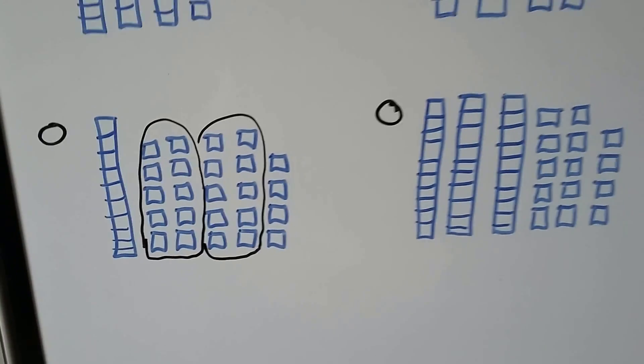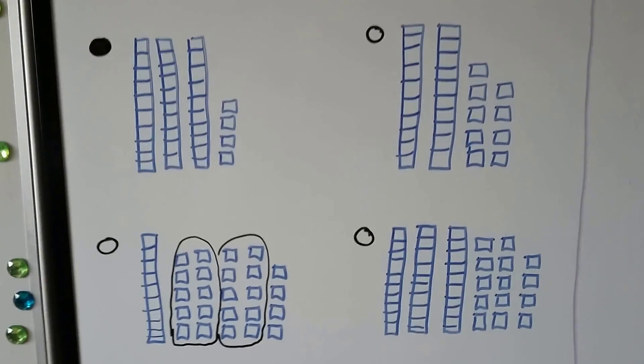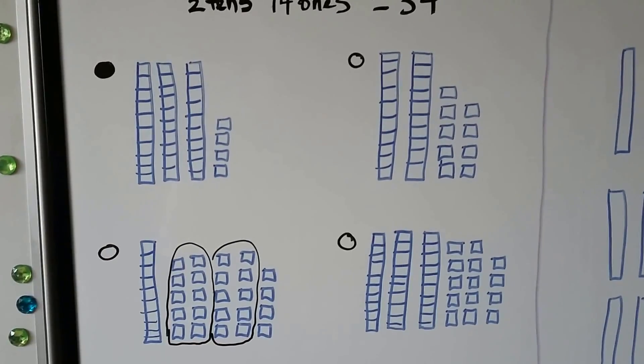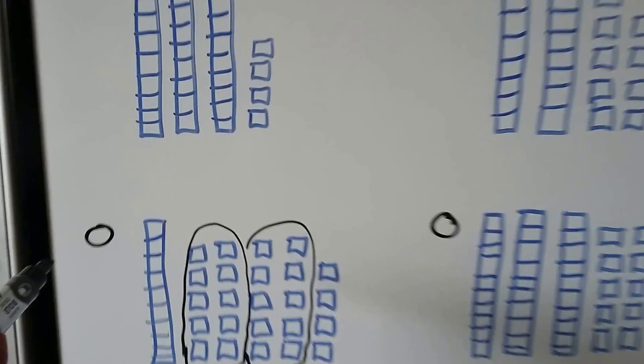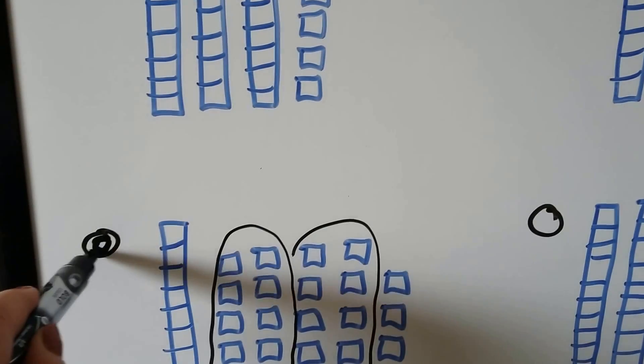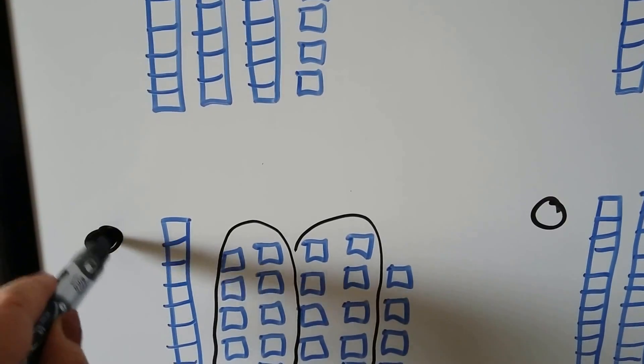...three, four ones. That does make 34. That's three tens and four ones. So that one is a way to show 34 also, isn't it?